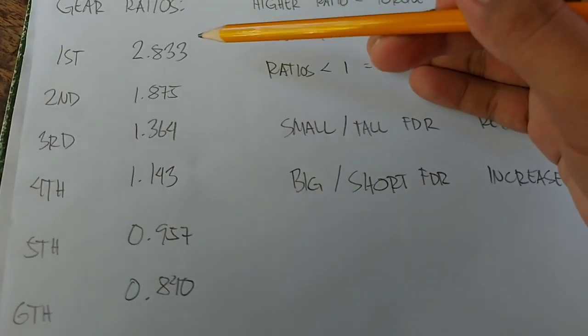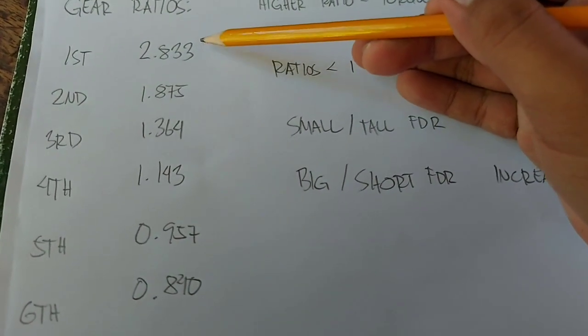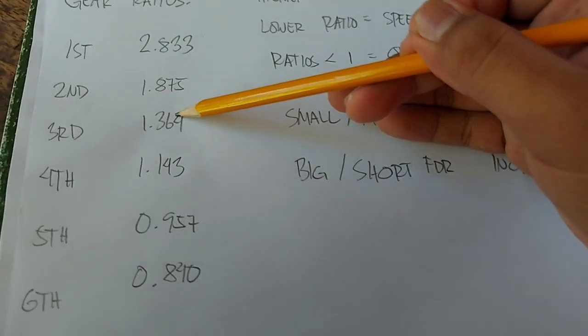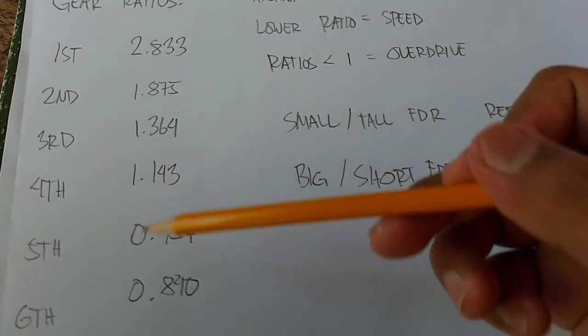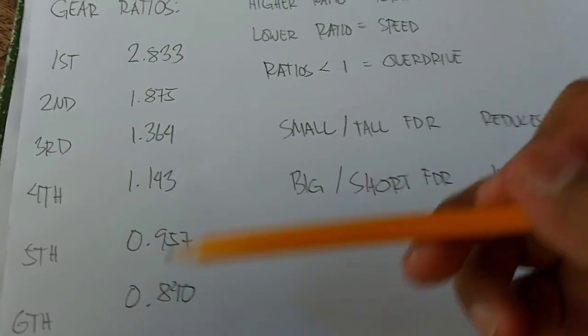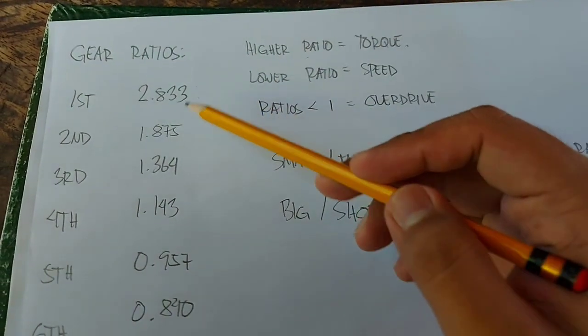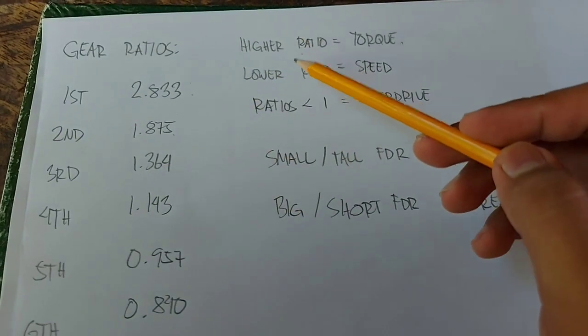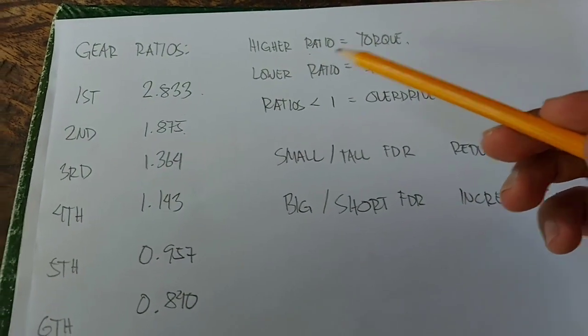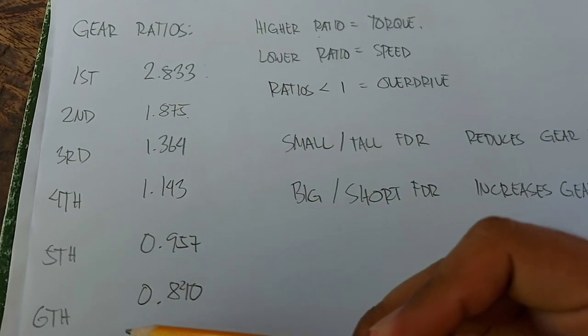You should observe that as you get closer to first gear, your gears are taller. And as you approach last gear, of course, it goes down. So the higher ratio equals more torque, that's 1st, 2nd, and 3rd, whereas a lower ratio equals speed, which is 4, 5, and 6.